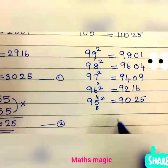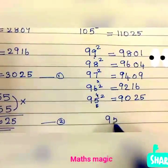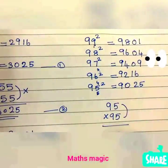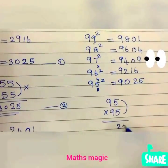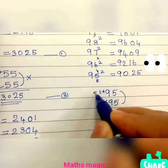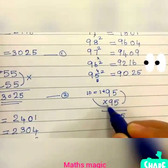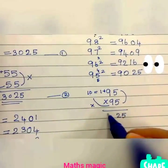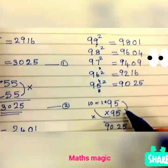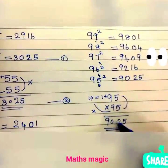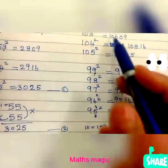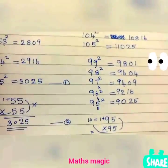Using the second method for 95 squared: 95 multiplied by 95. 5 times 5 is 25. Then take the next number after 9, which is 10 (9 plus 1). 10 times 9 is 90. So 95 squared is 9025. As I mentioned, two-digit numbers ending in 5 can be done in both methods. Thank you.